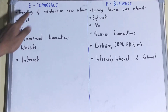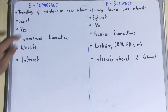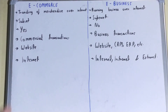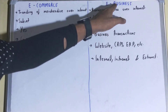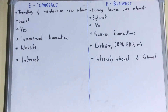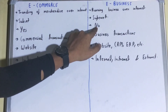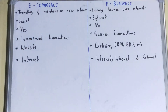If we talk about monetary transactions: e-commerce is limited to monetary transactions, because for every e-commerce order you need to pay — even on Amazon, every order involves a monetary transaction. But e-business does not always require a monetary transaction. For example, watching YouTube videos doesn't require any payment, so it doesn't involve a monetary transaction.